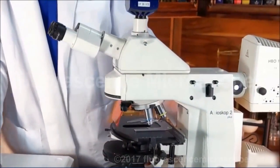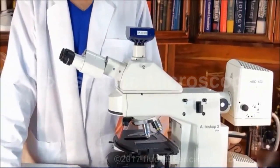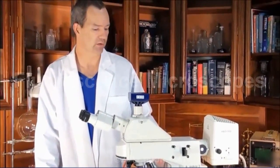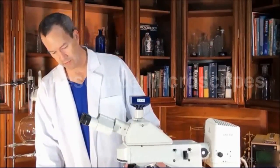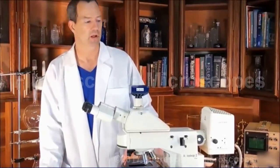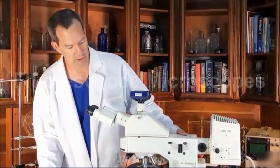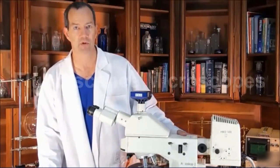Again, this is a Zeiss Axioscope 2 upright fluorescence microscope set up for bright field, dark field, phase contrast, and fluorescence microscopy. If you like this microscope or if you'd like to change any features about it, please contact us. We've got a wide variety of this type of equipment. Thank you.